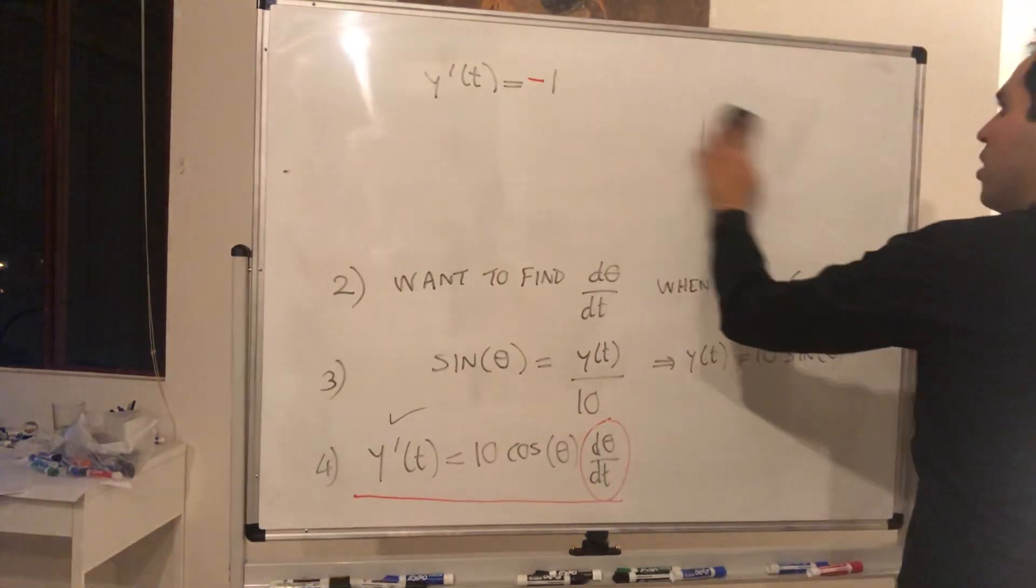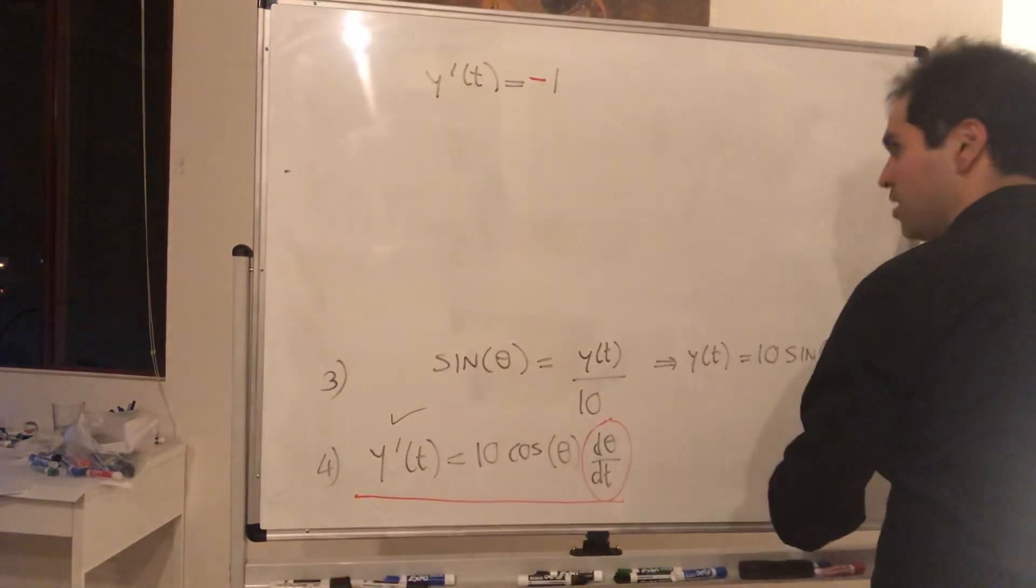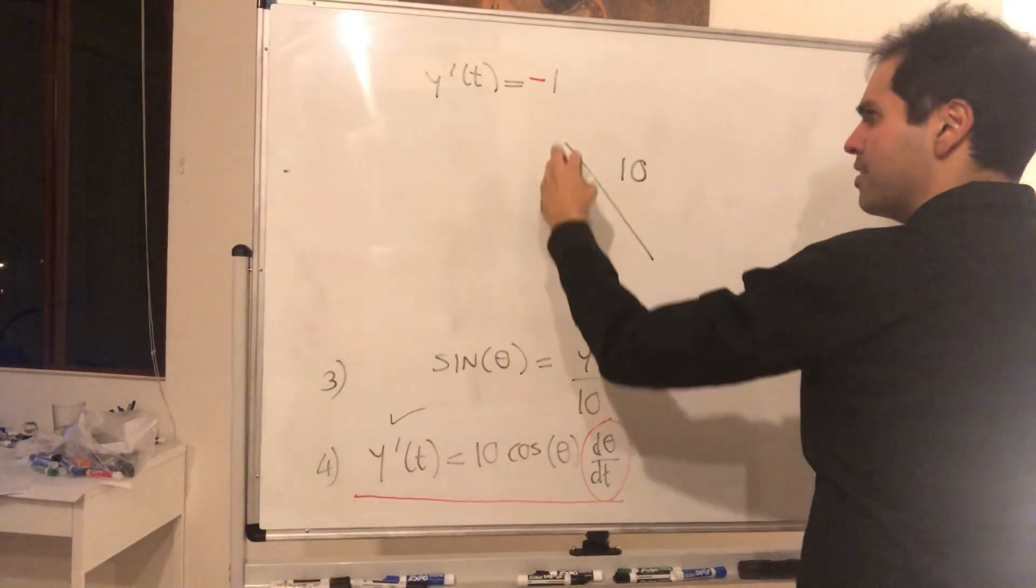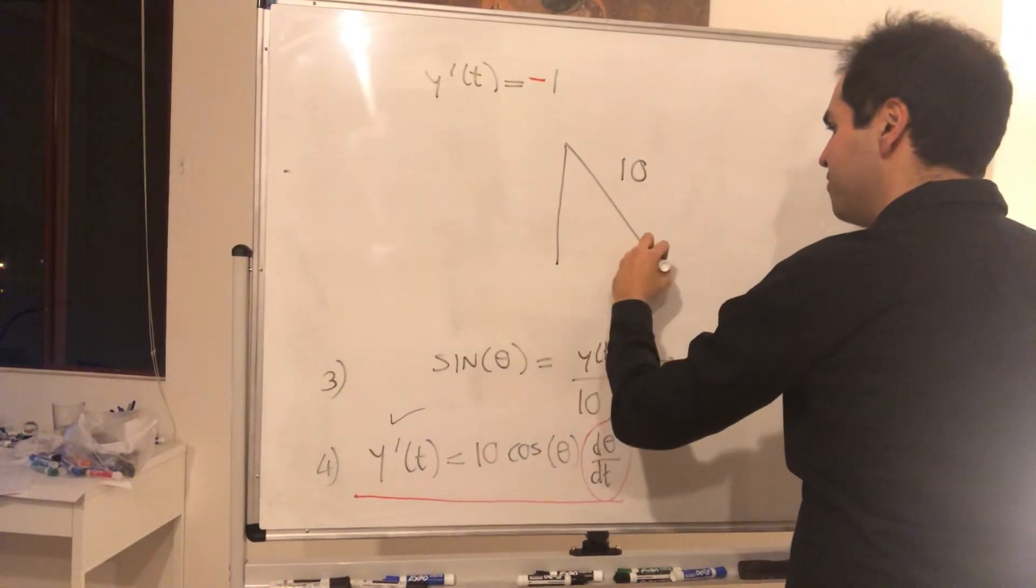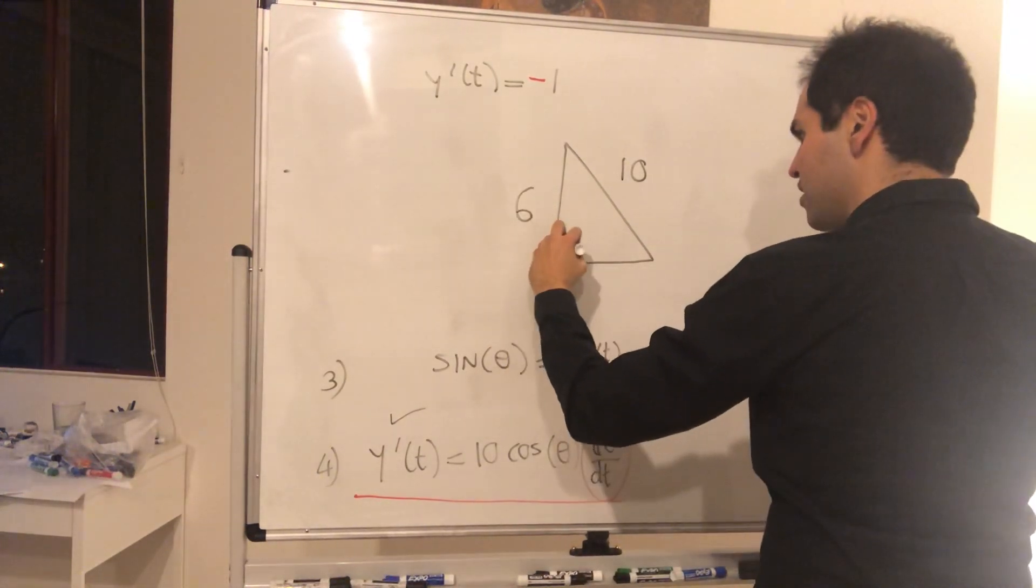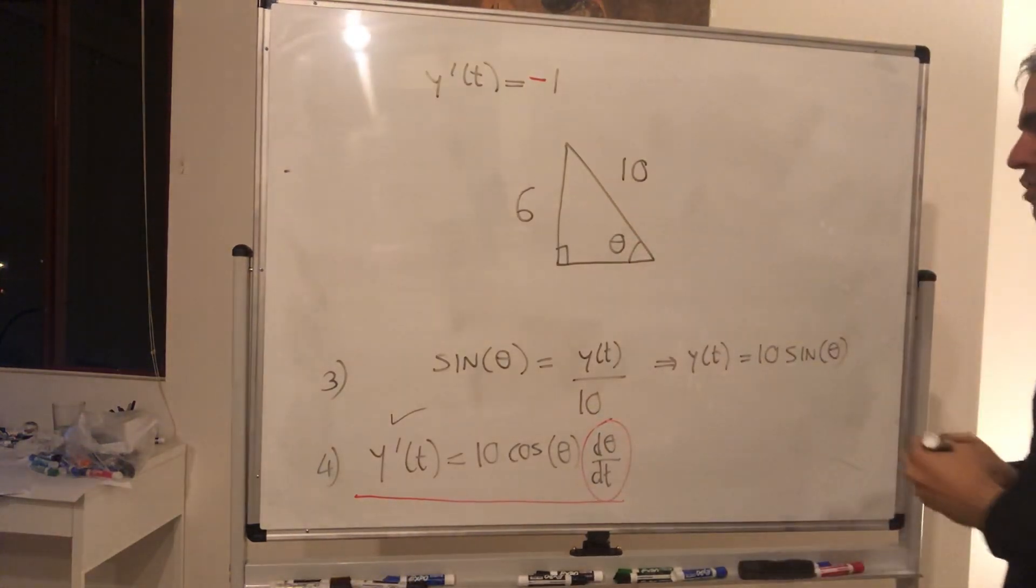So let's draw the picture again. So again, the length of the ladder is 10. And also what we know now is that y is 6. And what we need to do is find cosine of theta.